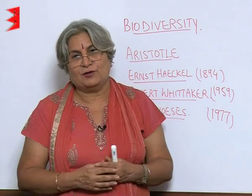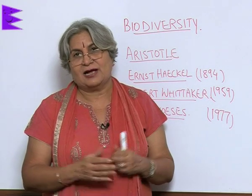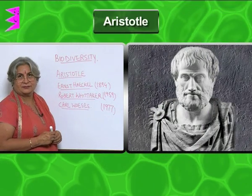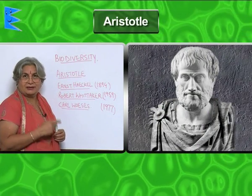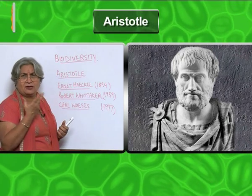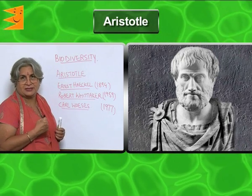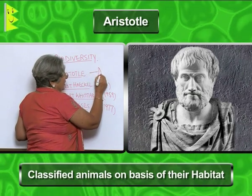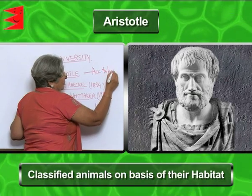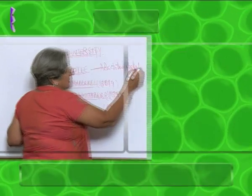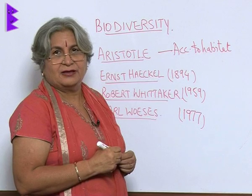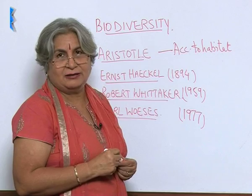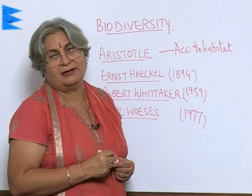So biologists worldwide also tried from time to time to classify organisms. The first one was Aristotle, a Greek philosopher who did a lot of work in every field of science. What he said was that we could classify organisms according to habitat — aquatic, found in water; terrestrial, found on land; or aerial, found in air.